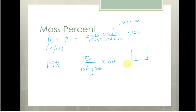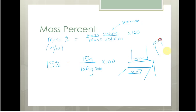In lab, you would put your beaker on the scale, tare it so it reads zero, then add sucrose until you have 15 grams. Then you're going to use your DI water and spray it in until you have a total of 100 grams. So you'd have 15 grams of sucrose in 100 grams of solution — 15 divided by 100 times 100% gives you 15%.